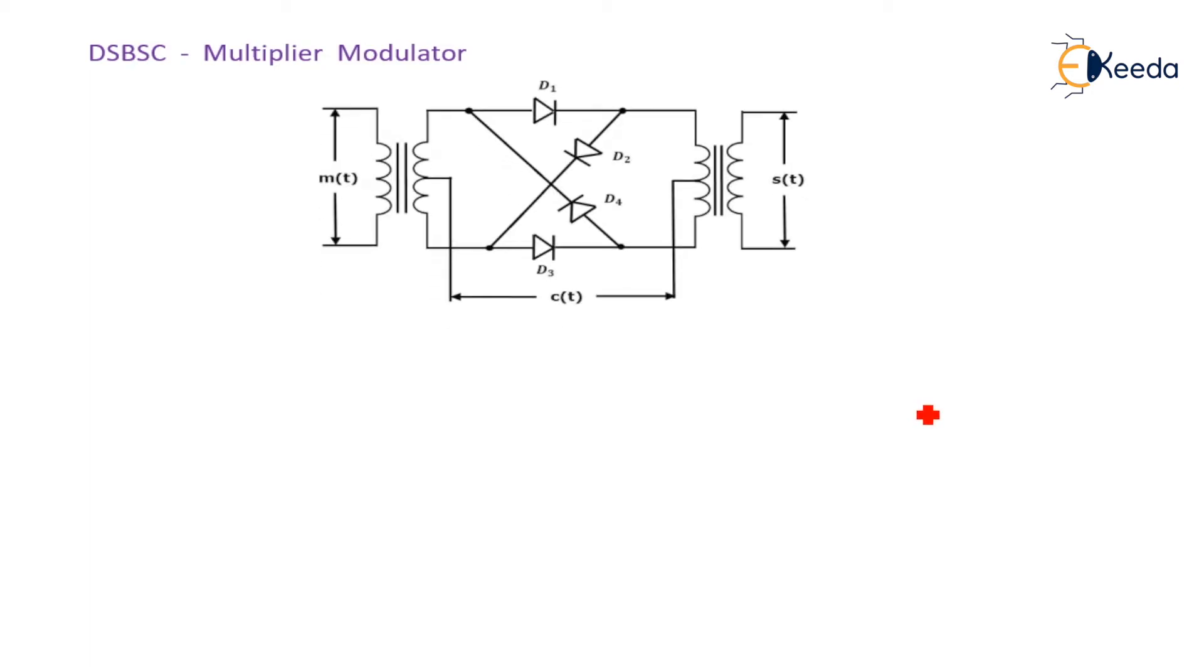So we have one bridge rectifier circuit, and input and output are coupled through coupling transformer line.